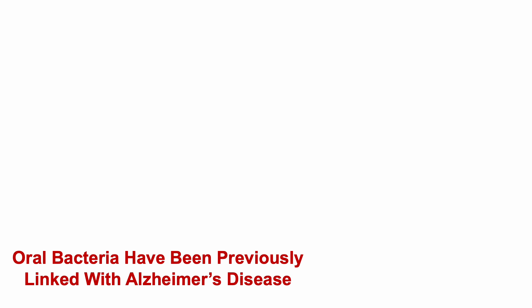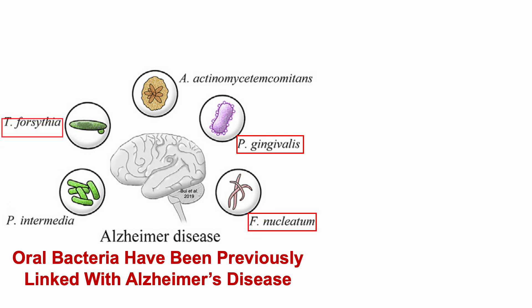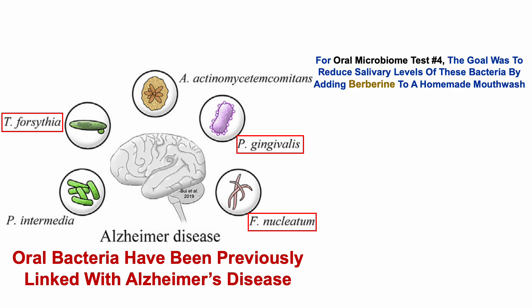Oral bacteria have been previously linked with Alzheimer's disease, and we can see that visually represented here, including Porphyromonas gingivalis (P. gingivalis), Fusobacterium nucleatum (F. nucleatum), and Tannerella forsythia (T. forsythia). This is my fourth oral microbiome test.